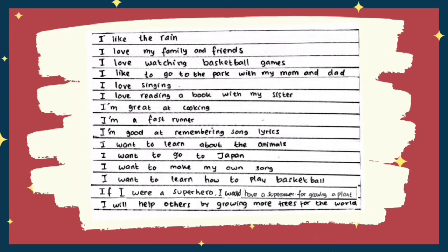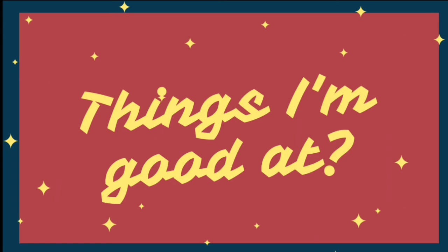Here are some examples of the things that you like: I like the rain. You can also use the word 'love' — I love my family and friends. I love watching basketball games. I like to go to the park with my mom and dad. I love singing. I love reading a book with my sister.